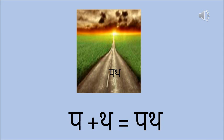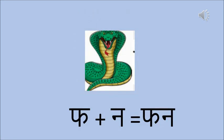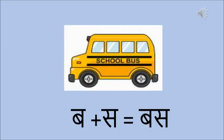The next one is Path — Pa and Tha together make Path. Path means the road. Then Fan — Fa and Na together make Fan. Can you see the cobra or the snake with the fan up? And Bas — Ba and Sa together make Bas. It could be a school bus or any other bus.